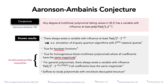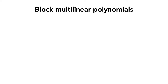We also know that to prove the general conjecture, it suffices to study polynomials with a certain special one-block decoupled structure. In this talk we focus on the case of block multilinear polynomials. In this setting, the set of variables is partitioned into d blocks, each with n variables, and each monomial contains at most one variable from each block.